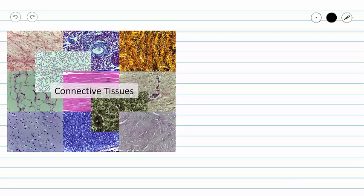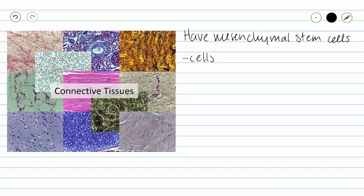All connective tissues originate from mesenchyme, and so they have mesenchymal stem cells. All connective tissues have two major components: the first of those are the cells, and the second is our extracellular matrix.